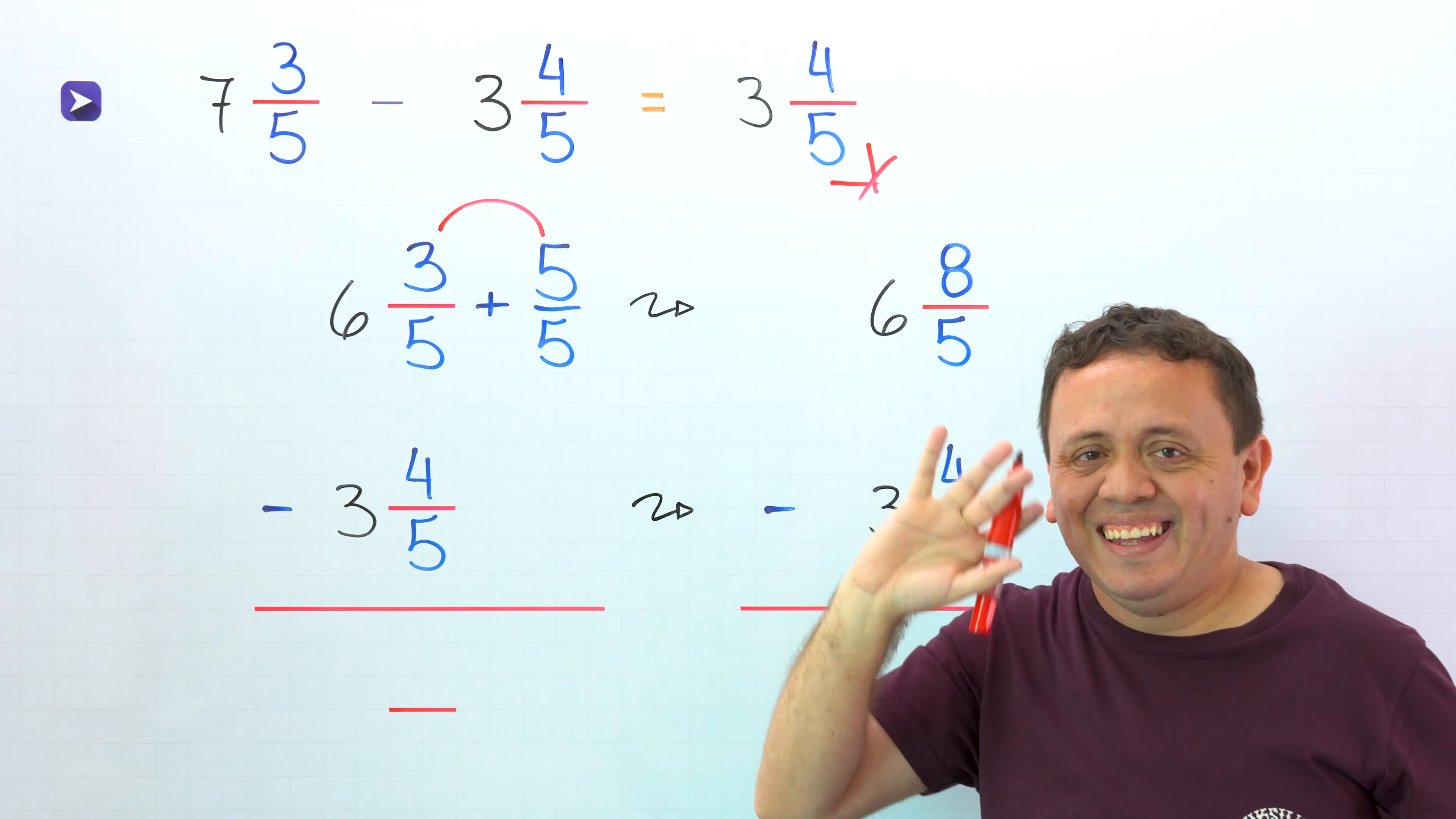Don't forget the minus sign and the second mixed number, 3 and 4 fifths. We're ready to find the difference.